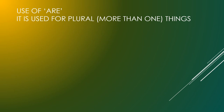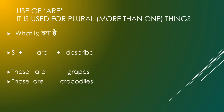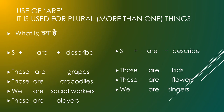Use of Are. It is used for plural — यह अनेक वचन के लिए यूज किया जाता है, जहां पर एक से ज़्यादा चीज़ें हों. For 'what is it': Subject + are + describe. These are grapes. Those are crocodiles. We are social workers. Those are players. Those are kids. These are flowers. We are singers. These are toys.